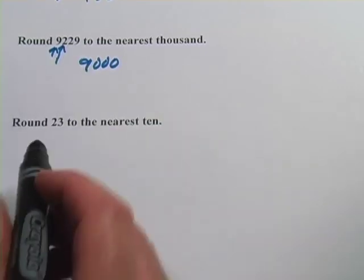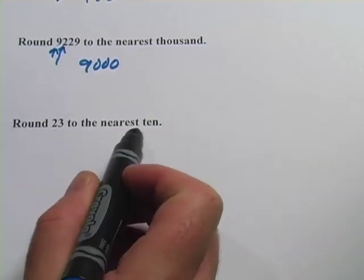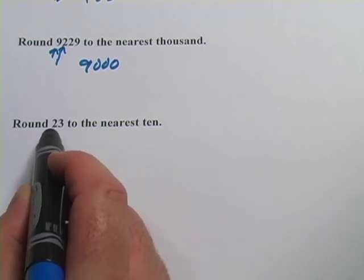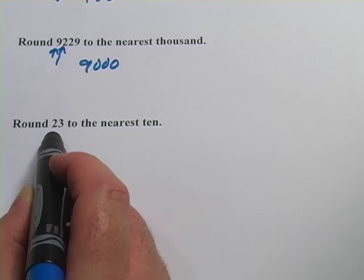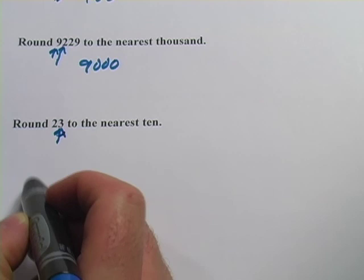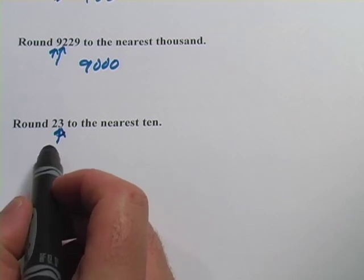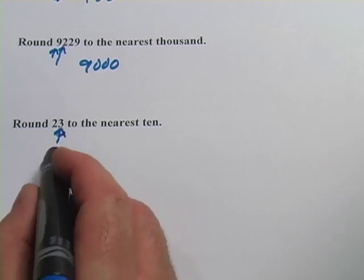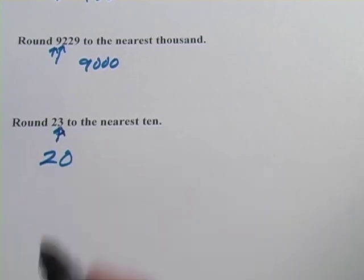One more. This one says round 23 to the nearest 10. So the nearest 10 is this 20, so we're either going to round this down to 20, or up to 30. We look at the second number here, right next to the place that we're rounding to, and ask ourselves, is that less than 5, or is it 5 or greater? Well, it's less than 5, so we round down, which would make this 20. So that's how to round to the nearest 10, nearest 100, or nearest 1,000.